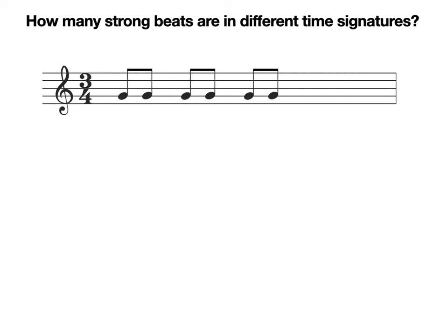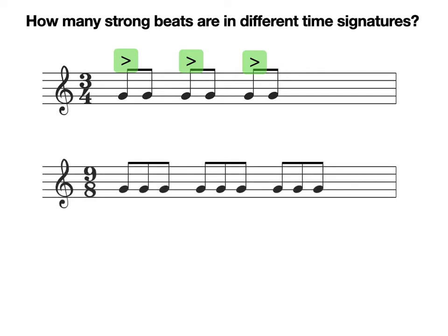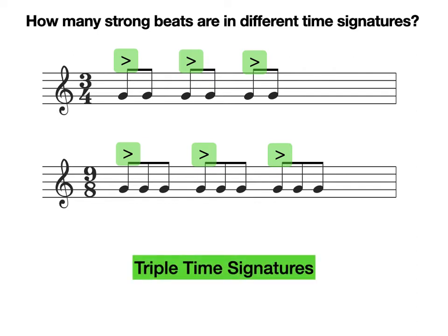What about this time signature? How many strong beats do we have? That's correct, we have three strong beats. Let's look at another one. This time signature also has three strong beats in a bar. Both of these time signatures are examples of triple time signatures, meaning there are three strong beats in each bar.